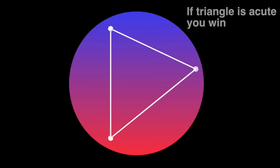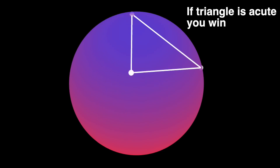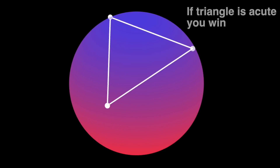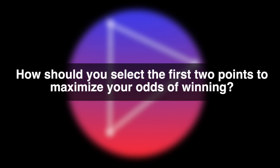The setup here is: you are going to select two different points on the surface of a sphere — any two you want — and then a third point is going to be randomly selected, also on the surface. If the plane triangle created by connecting those three points is acute, meaning all angles less than 90 degrees, you win. Otherwise, you lose. The question is: how should you select the first two points to maximize your odds of winning?